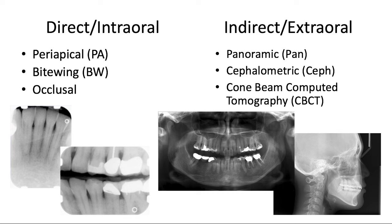On the right we have our indirect or extraoral images. These require a specialized screen placed outside the patient's mouth, which the x-rays contact before interacting with the film. Examples include panoramics or PANs, cephalometrics or CEPs, and the 3D cone beam computed tomography. We'll cover all of these radiographs in this video.